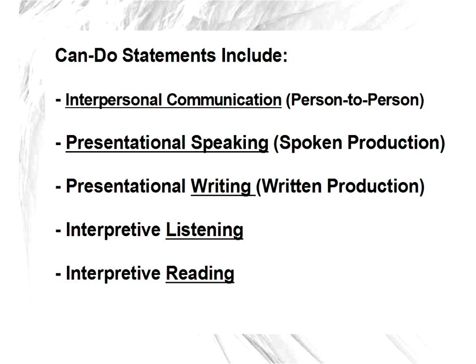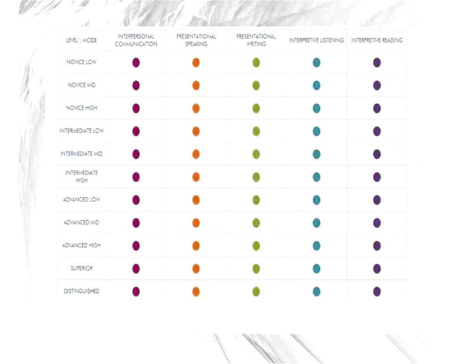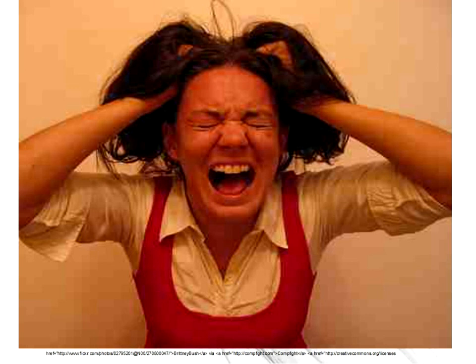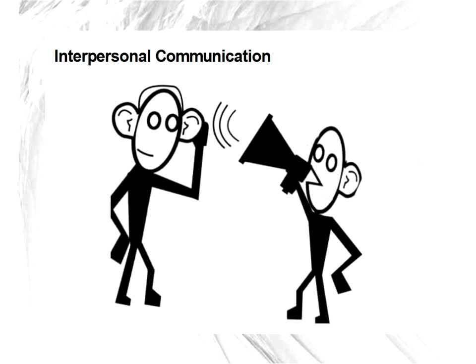These can-do statements include interpersonal communication, presentational speaking, writing, listening, and reading. It's comprehensive across those skill areas, and also covers various levels: the novice level, intermediate level, advanced level, superior, and distinguished. For each level, there's a series of statements that identify what it means to listen or speak at that level. It's a tremendous document. However, it's overwhelming — you can't implement all those things at once. Most people pick one area and focus on that. I suggest focusing on interpersonal communication, because being able to speak the language is really the critical part.